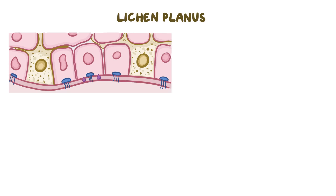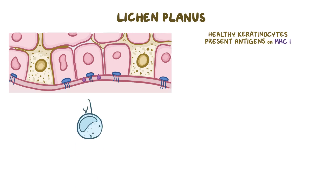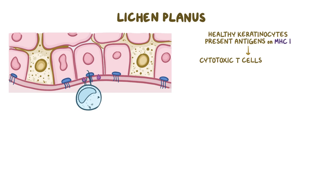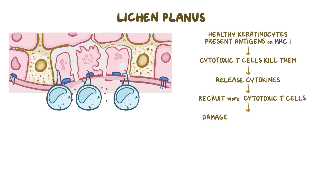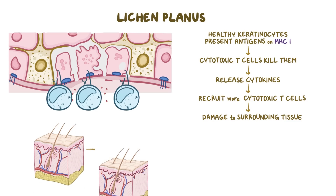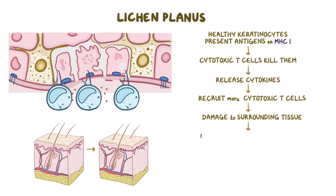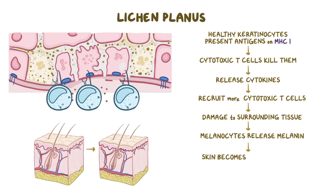In lichen planus, some healthy non-infected keratinocytes start presenting antigens on MHC-1 molecules, and it's unclear why they do that. This antigen presentation enables cytotoxic T cells to attack and kill these keratinocytes. In killing the keratinocytes, these cytotoxic T cells also release cytokines, which recruit more cytotoxic T cells to the scene. That leads to more damage to the keratinocytes as well as to the surrounding tissue in the basal lamina. That changes the shape of the dermoepidermal junction from smooth waves to being more angulated and sawtooth-shaped. Also, melanocytes at the stratum basale become damaged and release their melanin, causing the skin to become darker or hyperpigmented.